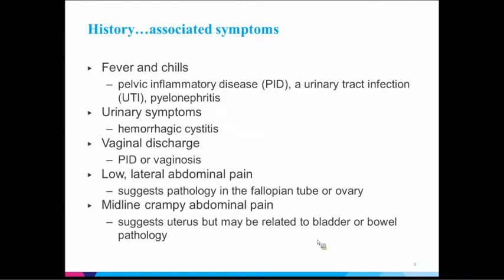Also consider associated symptoms. Vaginal bleeding can come from a variety of things, not just early pregnancy. Look for fevers, chills, urinary symptoms, discharge, lower abdominal pain, and midline crampy abdominal pain. That can help differentiate what system you're working with — it may be coming from the bladder, the bowel, the uterus, tubes, or ovaries.